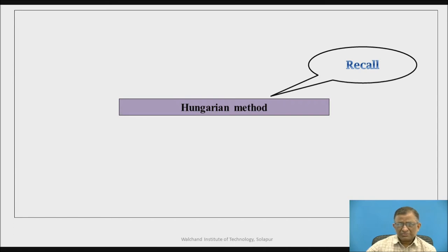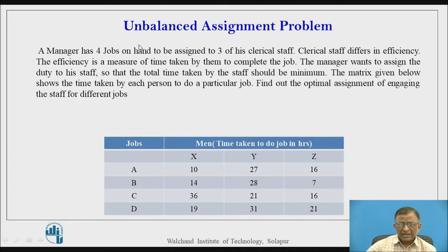Pause the video for a moment and recall the Hungarian method that I explained in my earlier video, which is used to solve assignment problems. Now let me consider an example: a manager has four jobs to be performed but only three clerical staff available. Jobs are four whereas the available facility — clerical staff — is only three. All these staff differ in efficiency, measured as the time taken by a particular staff member to complete a particular job.